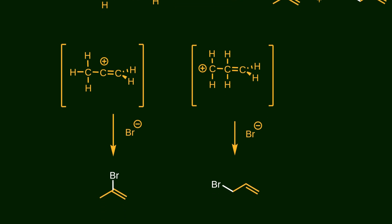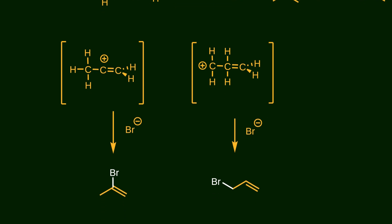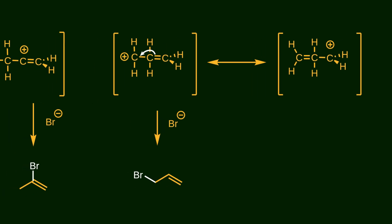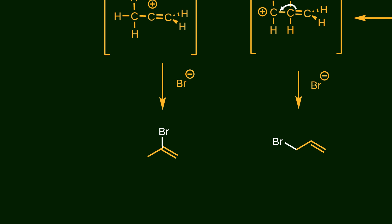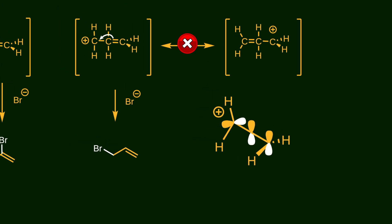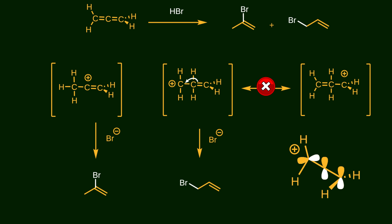Then the nucleophile — in this case bromide ion — adds to the carbocation center. You might think the carbocation formed at the terminal carbon is more stable because of possible resonance structures, suggesting that bromide ion should add to the terminal carbon atom. But surprisingly, that's not what happens. Bromide ion adds to the central carbon atom. Why? Because the empty p orbital of the carbocation and the pi bond are perpendicular to each other, meaning there is no effective overlap and thus no resonance stabilization, unlike what you'd see in an allylic carbocation. So in this case, the more stable intermediate is actually the secondary carbocation formed at the central carbon, not the terminal one.